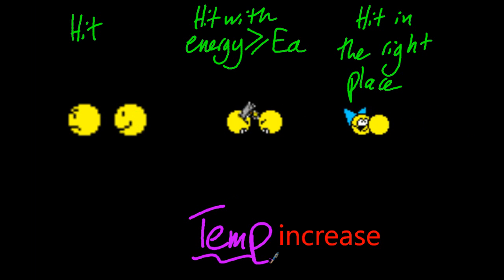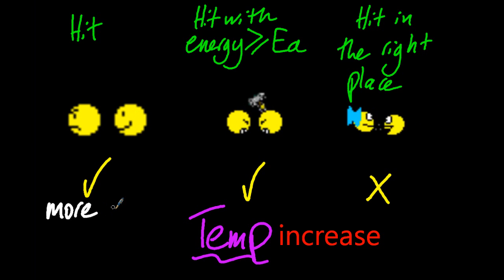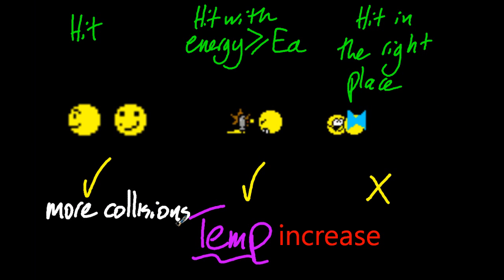So how does temperature play into those three ideas? Well, temperature gives a tick for the first two and a cross for the last one. So temperature causes more collisions. You have to say per unit time, or the IB won't give you the point.